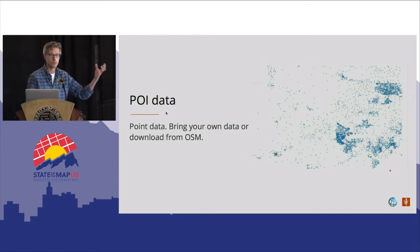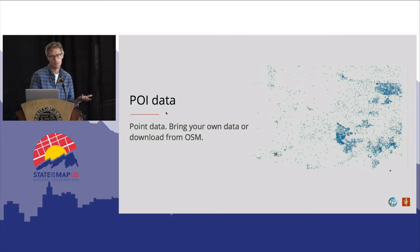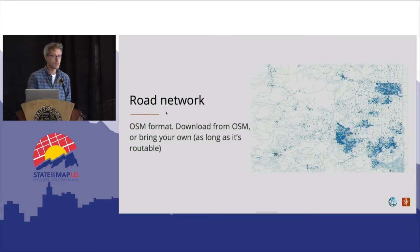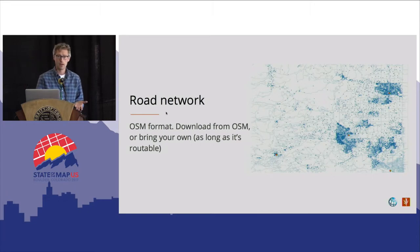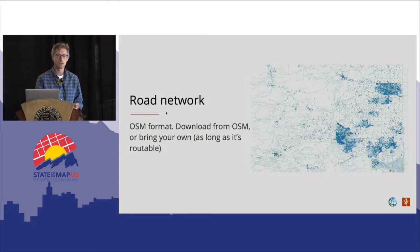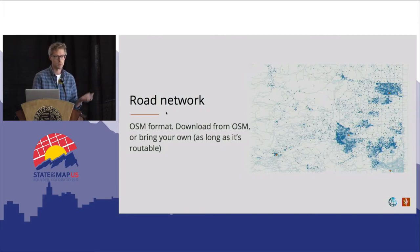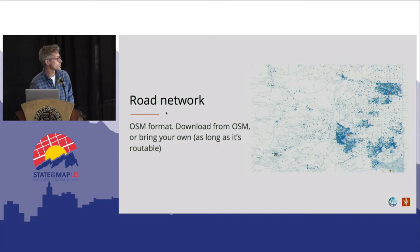RAM also needs a road network, which can be pulled from OSM for smaller areas, or you can bring your own road network data. The most important prerequisite is that the road network is routable — that's essential to be able to do this analysis.